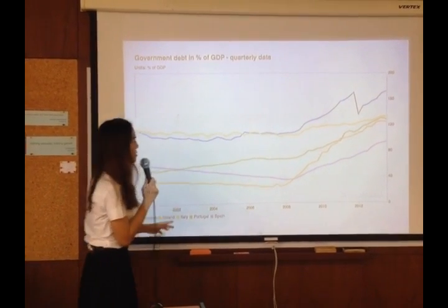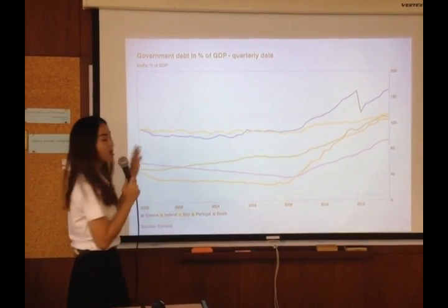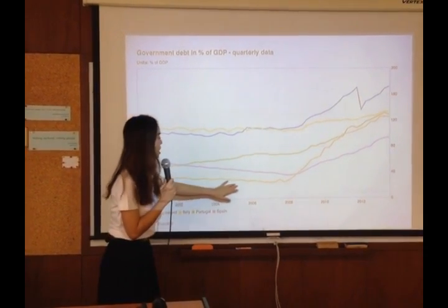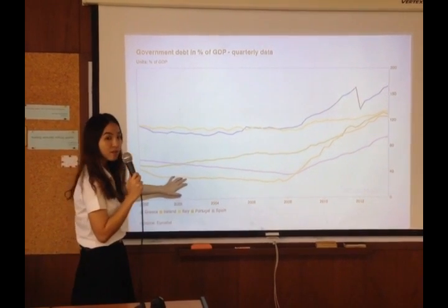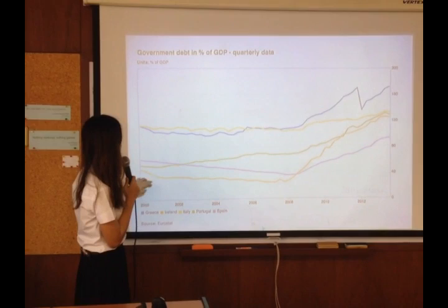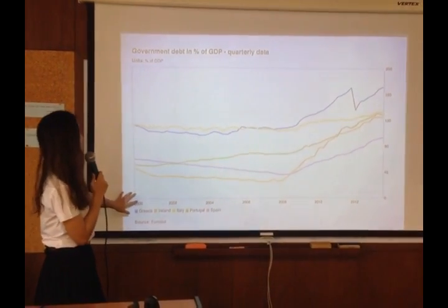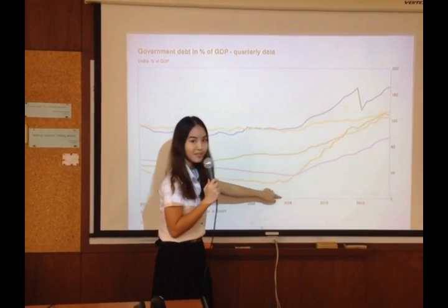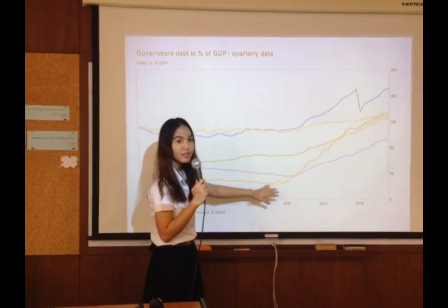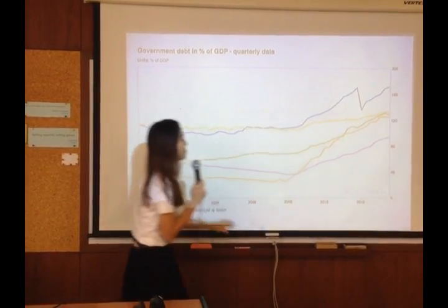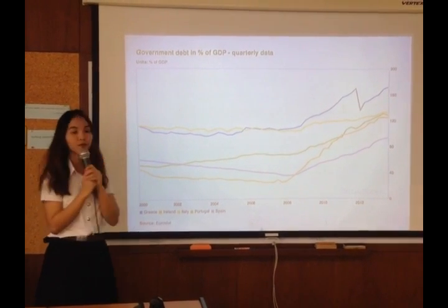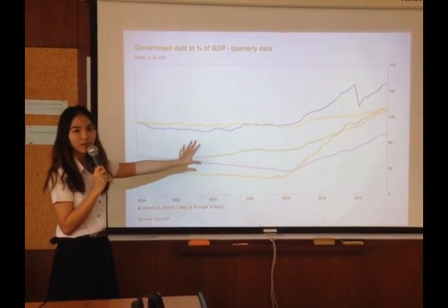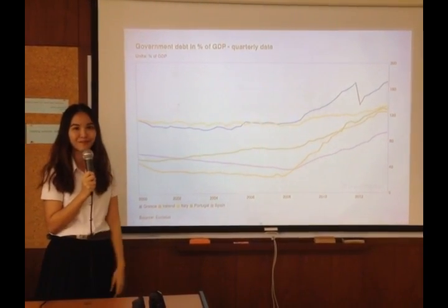But when we look at another country — especially Ireland — we will see that Ireland did not have a problem with government debt, and you can see that since 2000 they didn't have that problem. But since 2008, their debt has been increasing steadily. So we conclude that the financial crisis, most of it, stems from government debt.